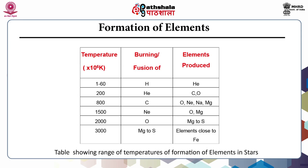This table shows the range of temperatures for formation of elements in stars. It has three columns: temperature, the burning or fusion element, and which elements are produced. When temperature is 1 to 60 × 10⁶ Kelvin, burning of hydrogen takes place, producing helium. At 200 × 10⁶ Kelvin, burning of helium produces carbon and oxygen. At 800 × 10⁶ Kelvin, burning of carbon produces oxygen, neon, sodium, and magnesium.